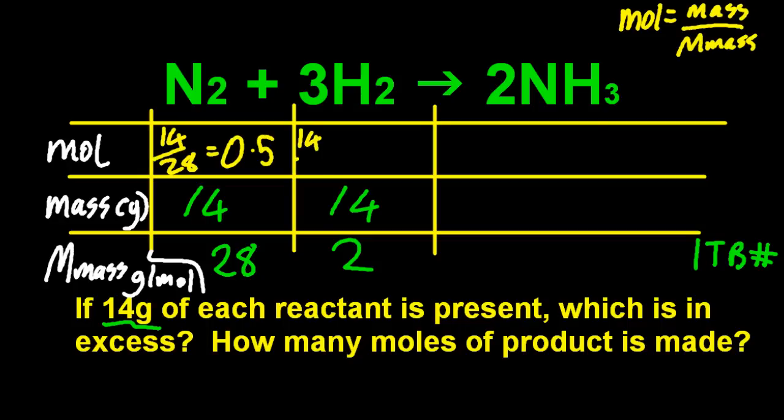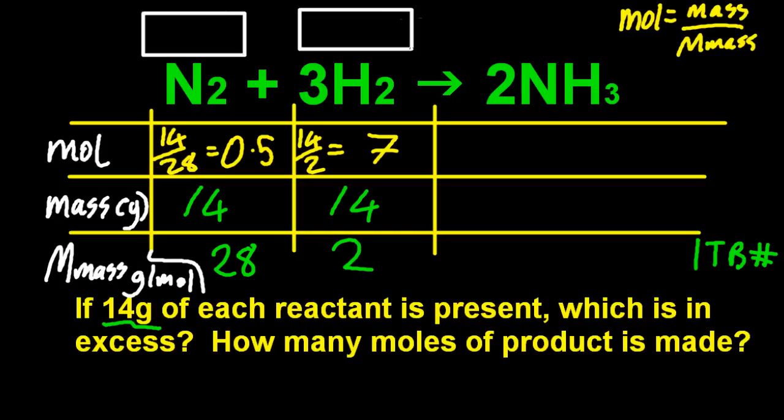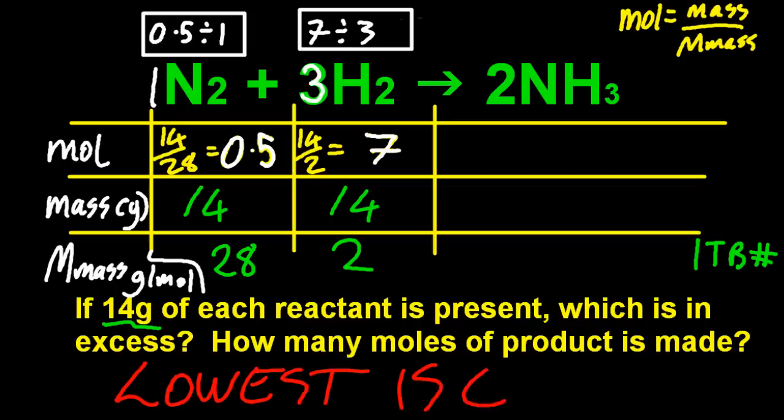Moles is mass over molar mass. And you can see, possibly just by inspection, that there's way too much hydrogen. Half of nitrogen, seven of hydrogen. But what if the numbers are evil? How can I be sure? Well, this is my way. Put a box. Divide the moles by the coefficient. Divide the moles by the coefficient. And the lowest is the limiting. Lowest is limiting.